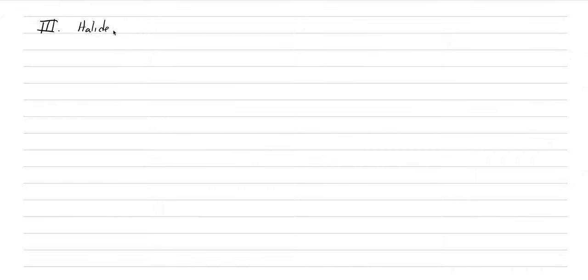In today's lecture we're going to go through a family of minerals called the halides. This is a family of about 150 different minerals but we're only going to talk about three of them today. In the textbook this is pages 374 and 375 for an introduction of the family, and then we go through the systematic mineralogy on pages 393 to 397.